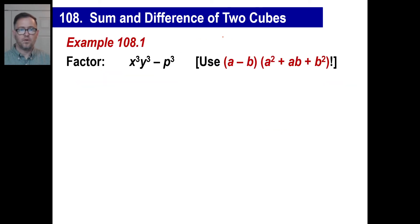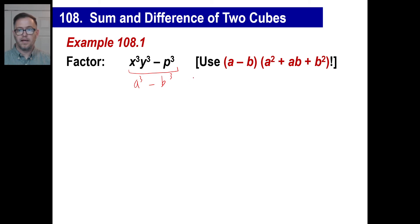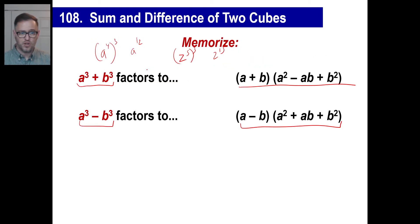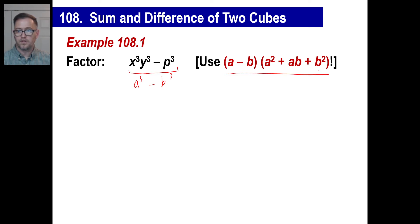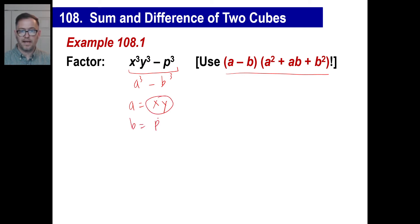Let's take a look at a couple of examples. We're going to factor this expression, and what you need to do is visualize it as something cubed minus something cubed — a cubed minus b cubed. If a cubed minus b cubed factors into (a - b)(a² + ab + b²), then you're going to look at this as: a cubed equals x³y³, so a equals xy, and b cubed equals p³, so b equals p.